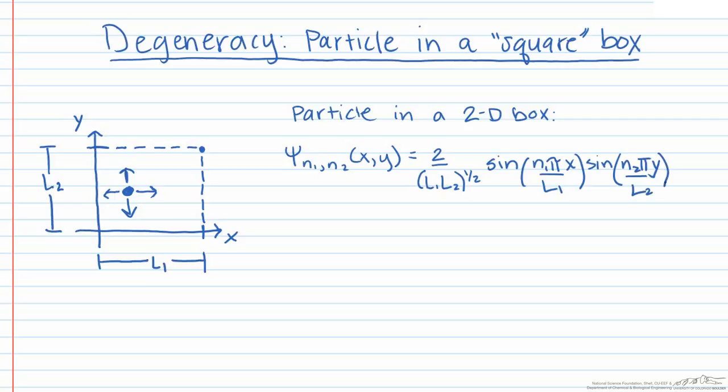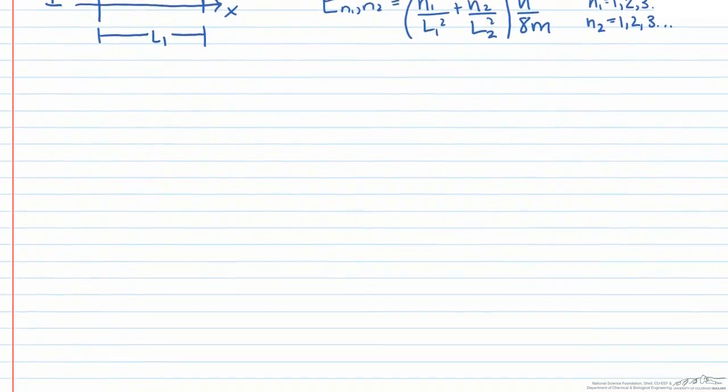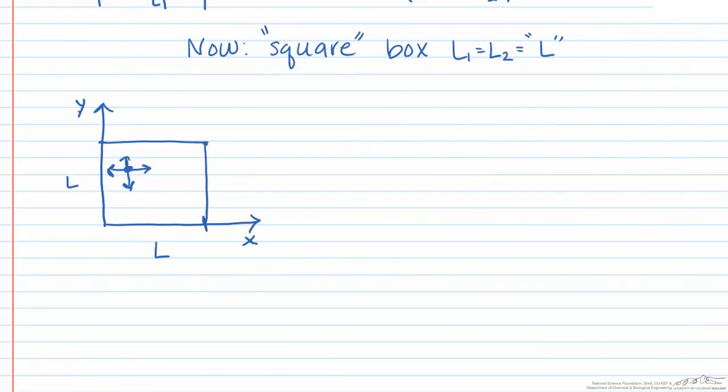And this gives the following corresponding energy levels E(n₁,n₂). Let's slightly change our system now so that the length of l₁ and l₂ are the same, and let's call this length L.